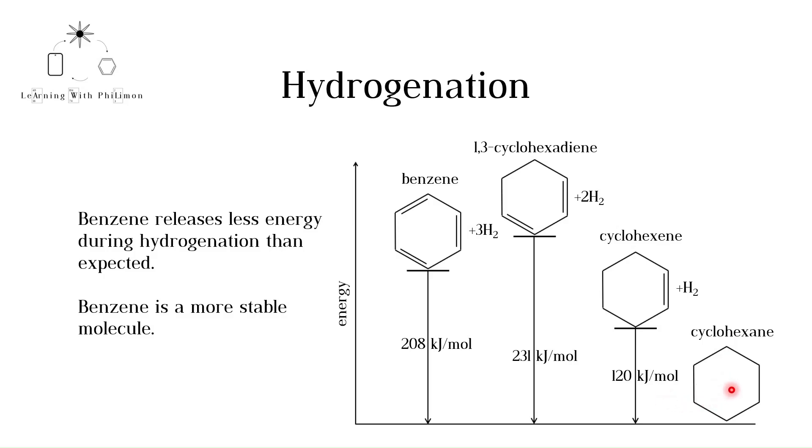Note that cyclohexane is an alkane. 1,3-cyclohexadiene is like cyclohexene but contains two double bonds. Both double bonds are broken during hydrogenation. As expected, approximately twice the amount of energy, 231 kJ, are released per mole. If benzene contained three double bonds, we would expect it to release three times as much energy, around 360 kJ per mole as cyclohexene during hydrogenation.